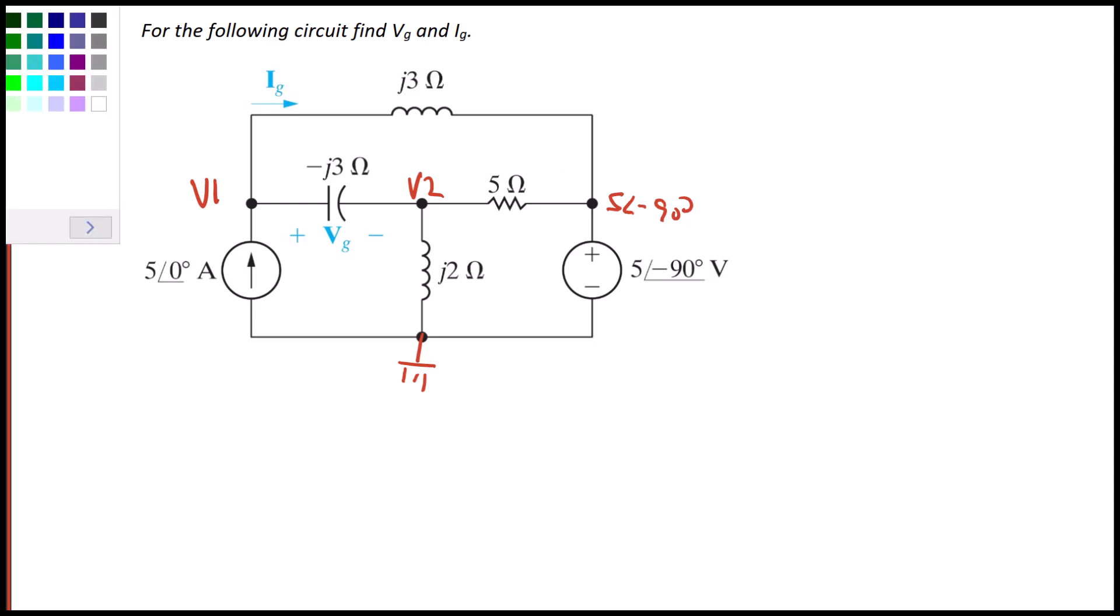Now, if I do the mesh current method, then I know the name of this current is already labeled as IG. I don't give this current a name because its name is five amps. And then I will label this current I1.